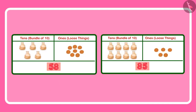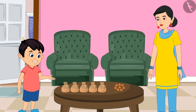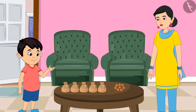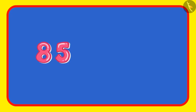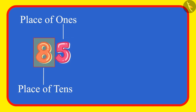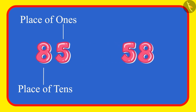85 and 58 are not equal. Oh yes mother, now I have understood. I will go and get more walnuts. In this example, we saw that in a number, this place tells us about ones and this place about tens. If the digits of these places get exchanged, then the value of the number changes. Understood children?